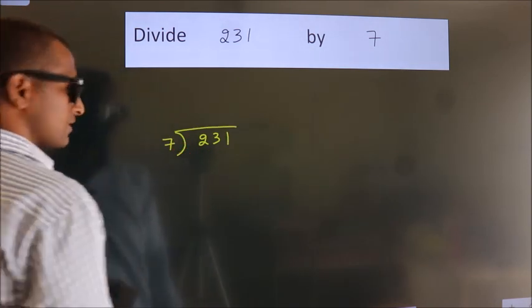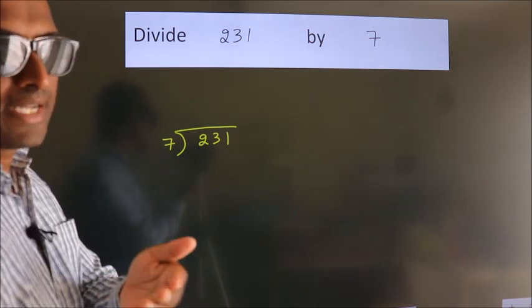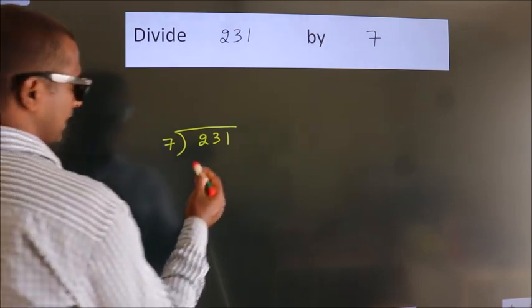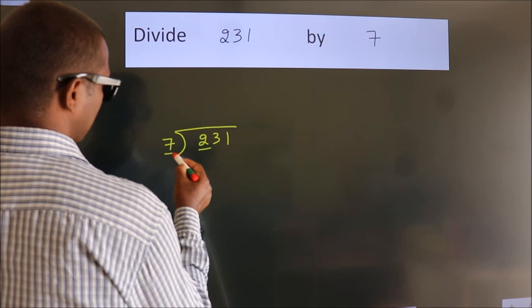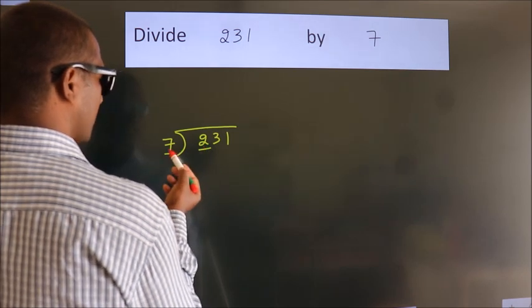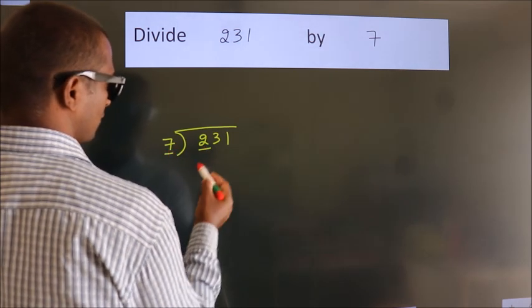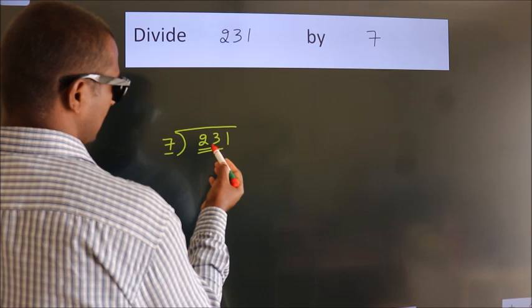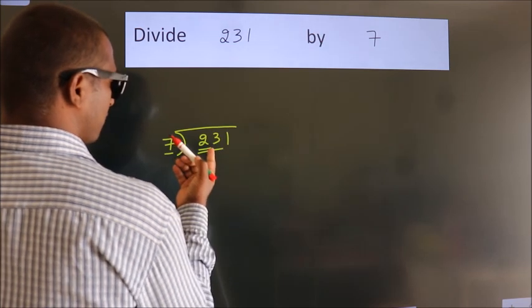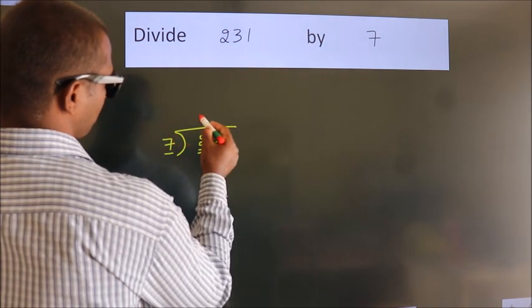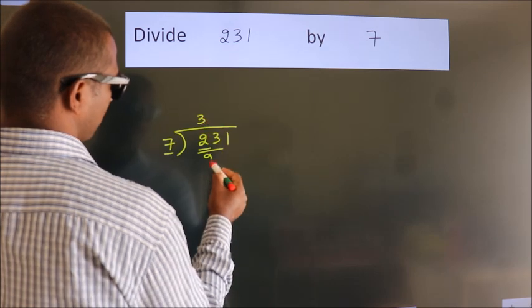This is your step 1. Next, here we have 2. Here 7. 2 smaller than 7. So we should take 2 numbers, 23. A number close to 23 in 7 table is 7 threes, 21.